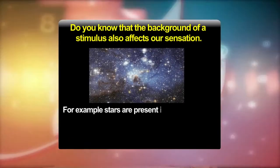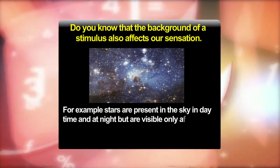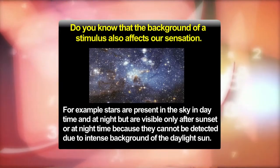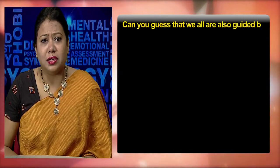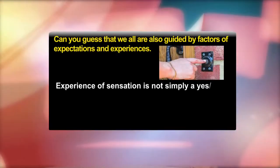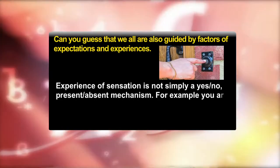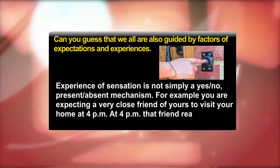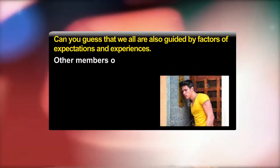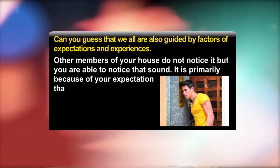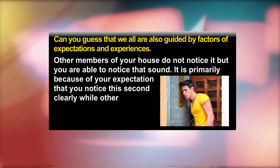Do you know that the background of a stimulus also affects our sensation? For example, stars are present in the sky in daytime and at night but are visible only after sunset because they cannot be detected due to the intense background of daylight. We are also guided by factors of expectations and experiences. For example, if you are expecting a close friend to visit at 4 pm and they ring the doorbell, you are able to notice that sound while other members of your house do not, primarily because of your expectation.